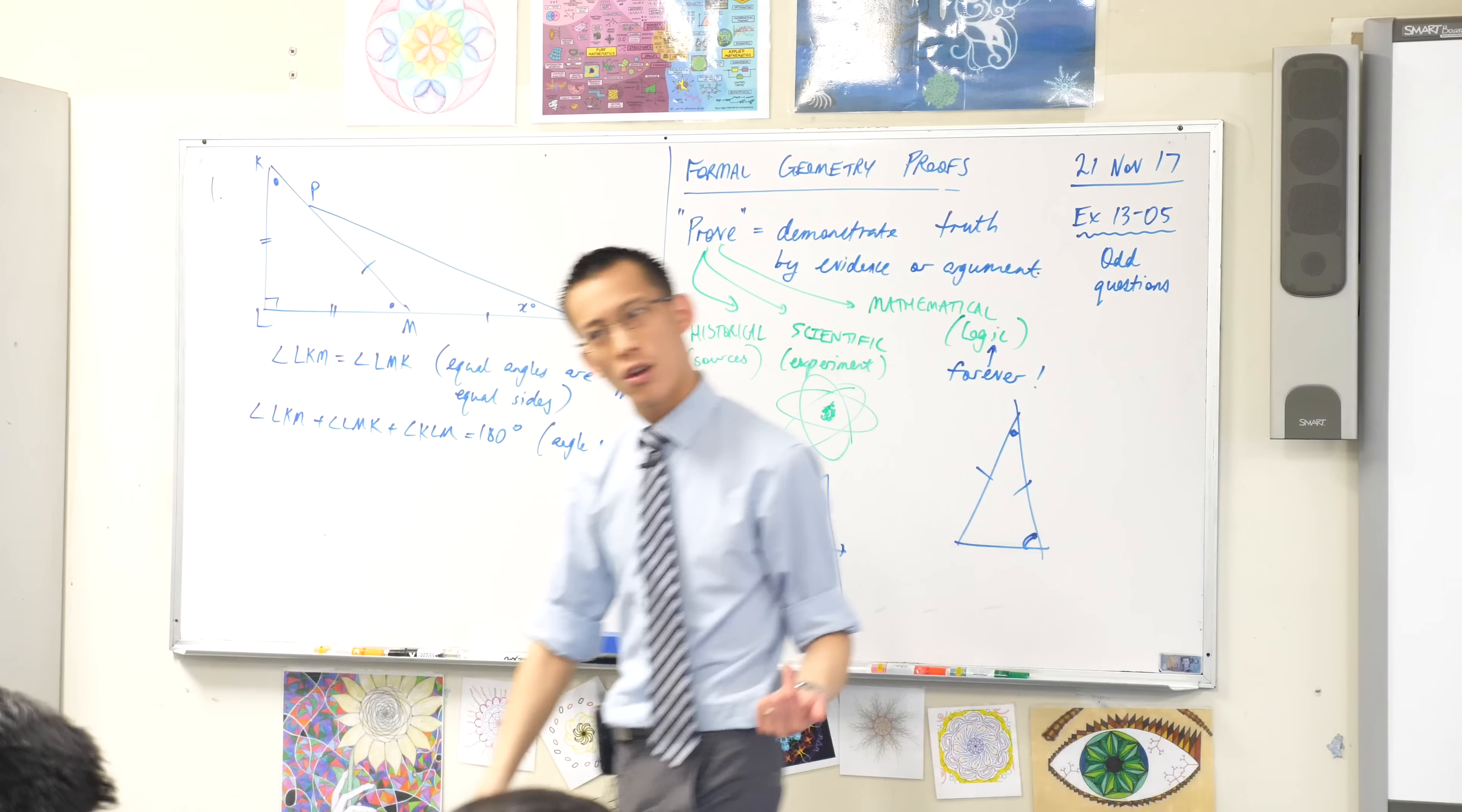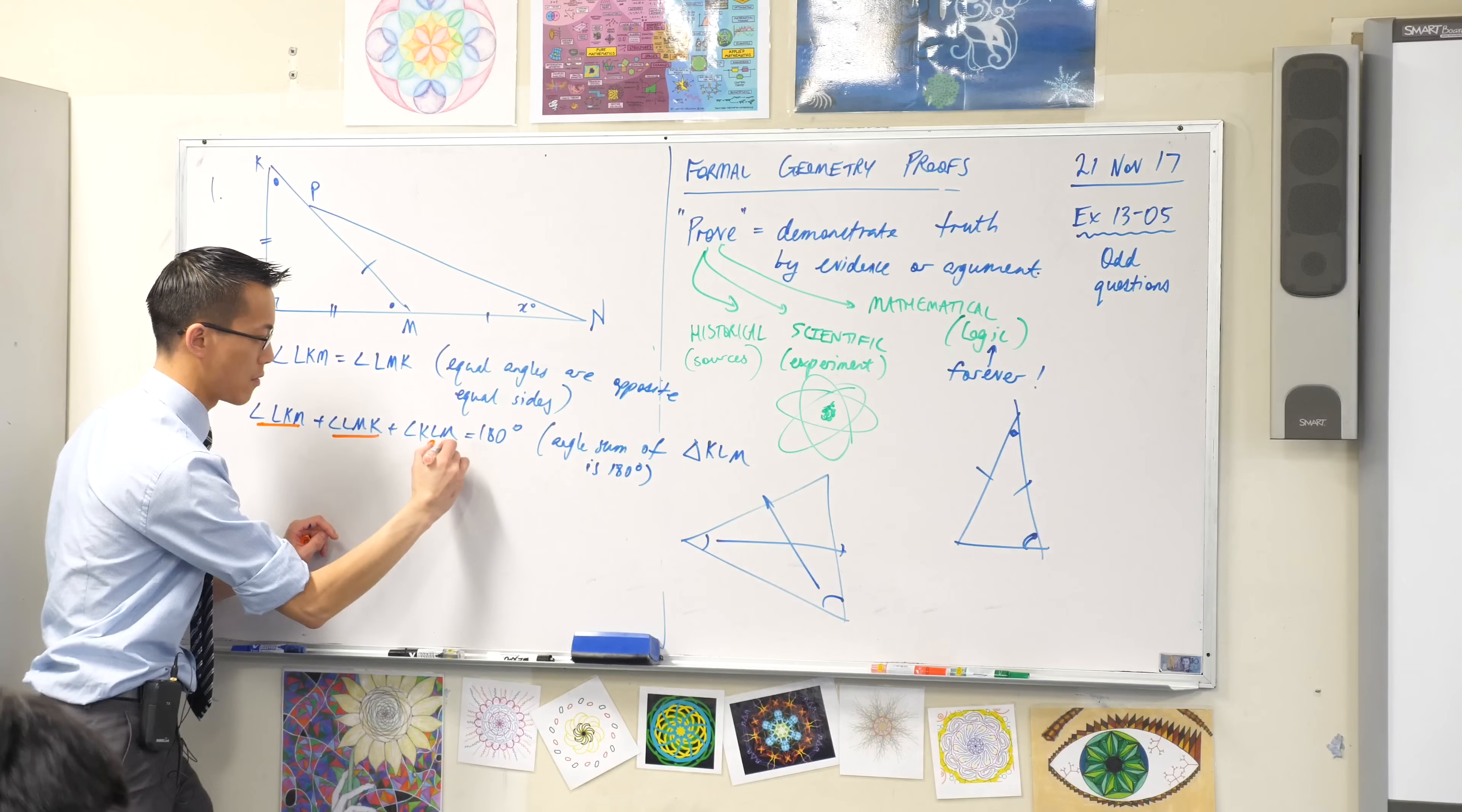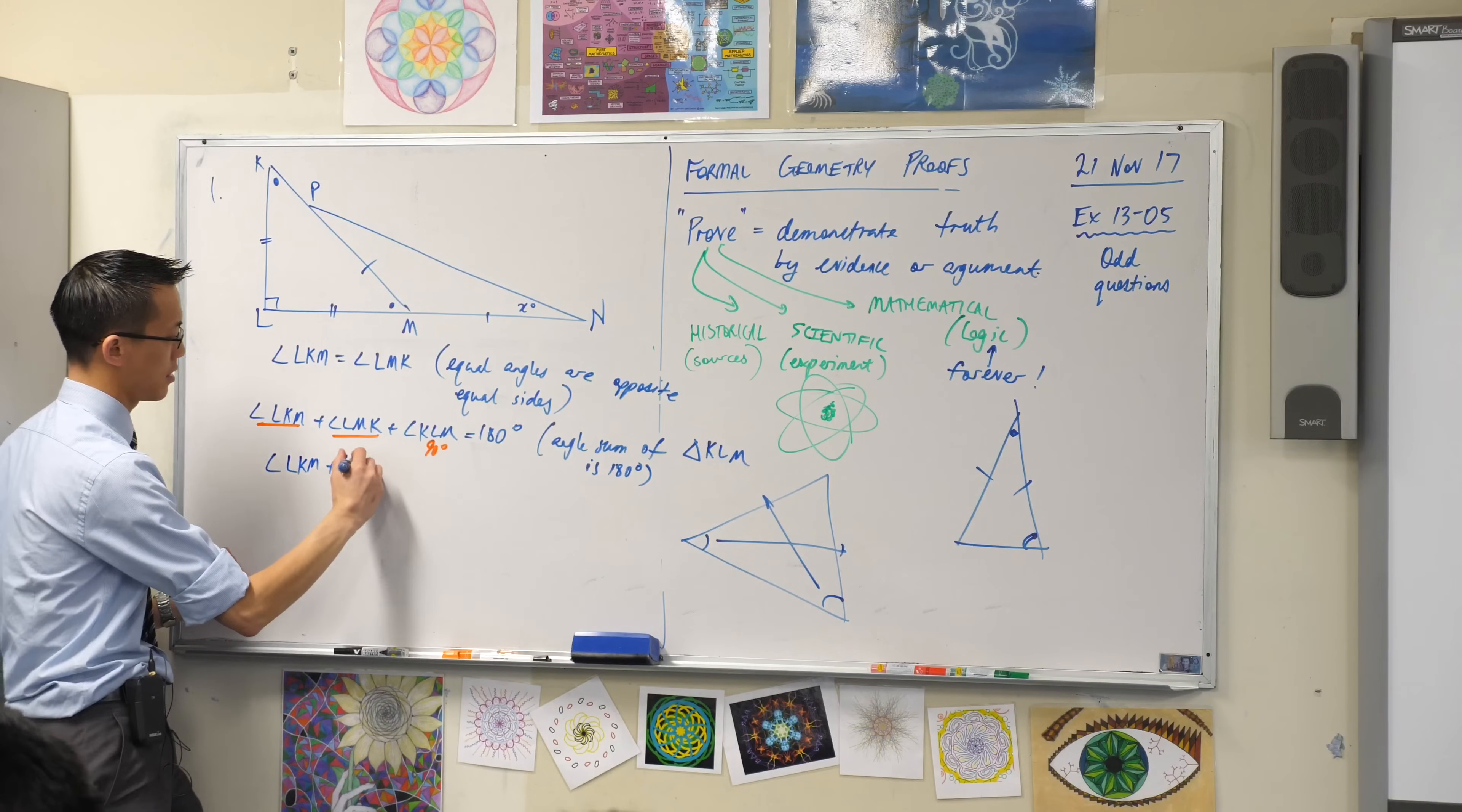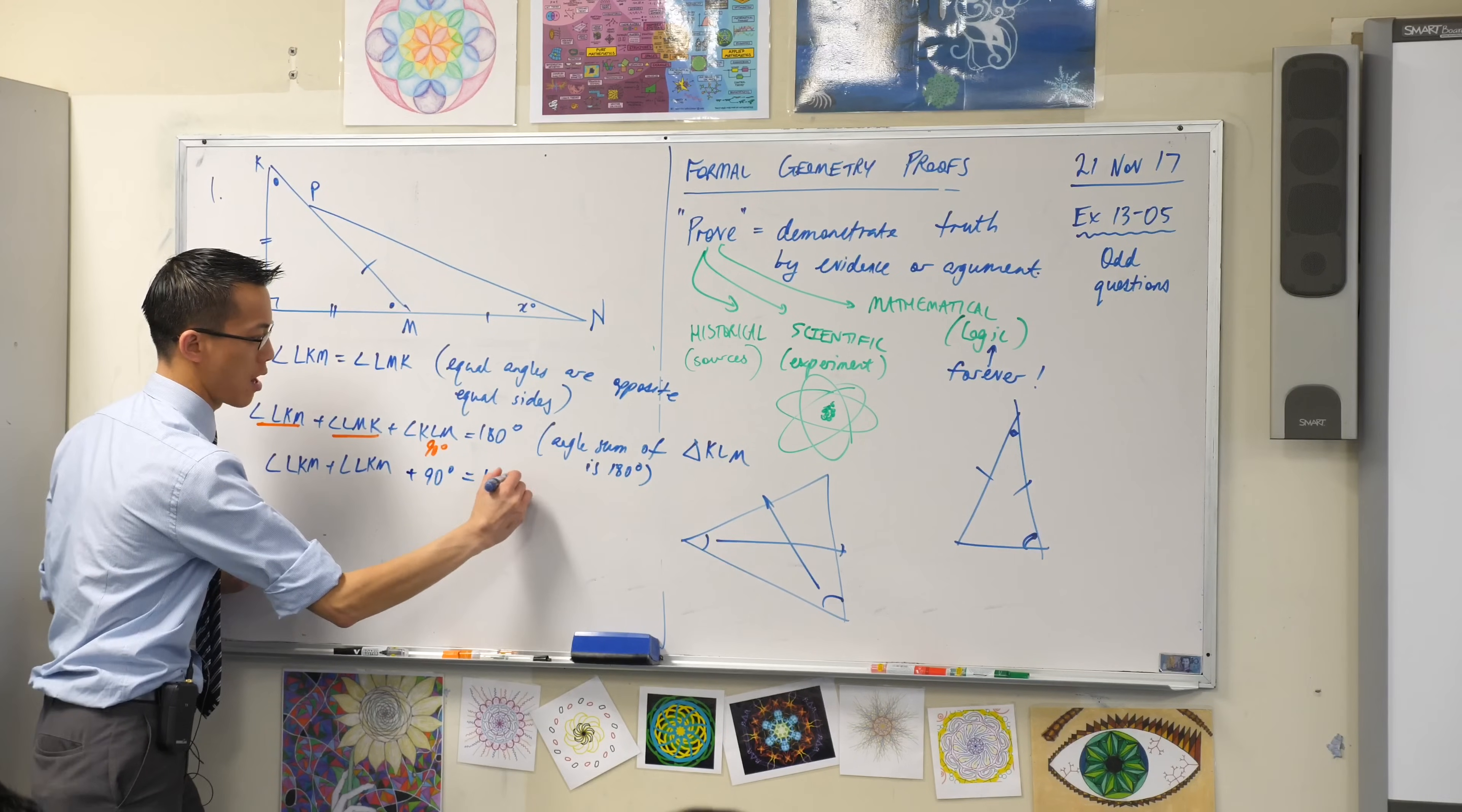I know what some of these things are. I just said that these two are equal. What's this one? It's 90 degrees. So on the next line, I'm going to do a substitution that shows all of that. I'm going to say LKM plus LKM, you see they're the same angle, I proved that up in this first line, plus 90 degrees equals 180.